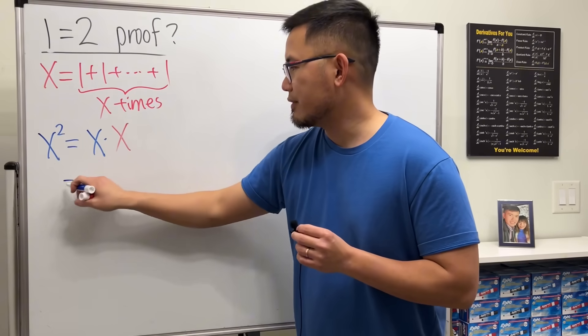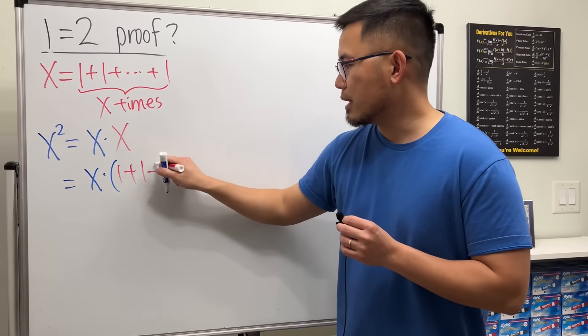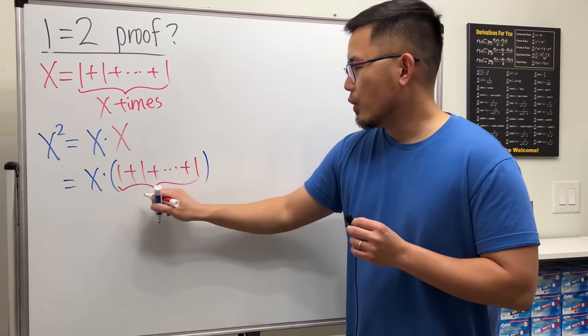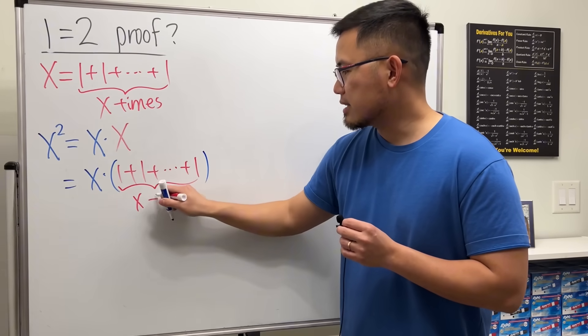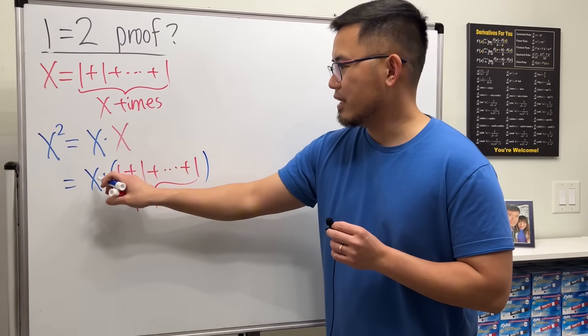And what we'll do next is I'm going to replace this red X with all these ones. So we have X right here times 1 plus 1 plus dot dot up to 1 right here. And again, remember we wrote down the 1 X times.